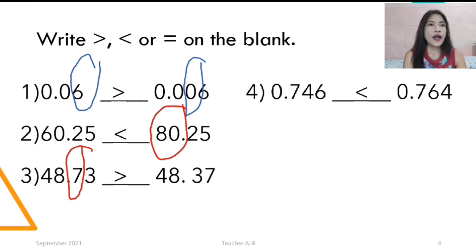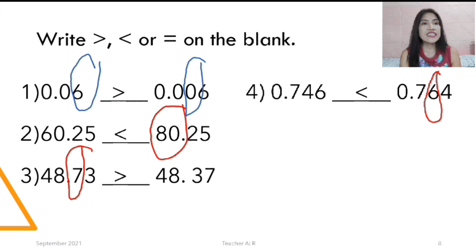Next, number 4. We're going to compare them. They both have the same 10th, which is 7. But on the 100th, the other one is 4, the other one is 6. Which is bigger? The bigger number is 6. So we have 0.746 is less than 0.764.